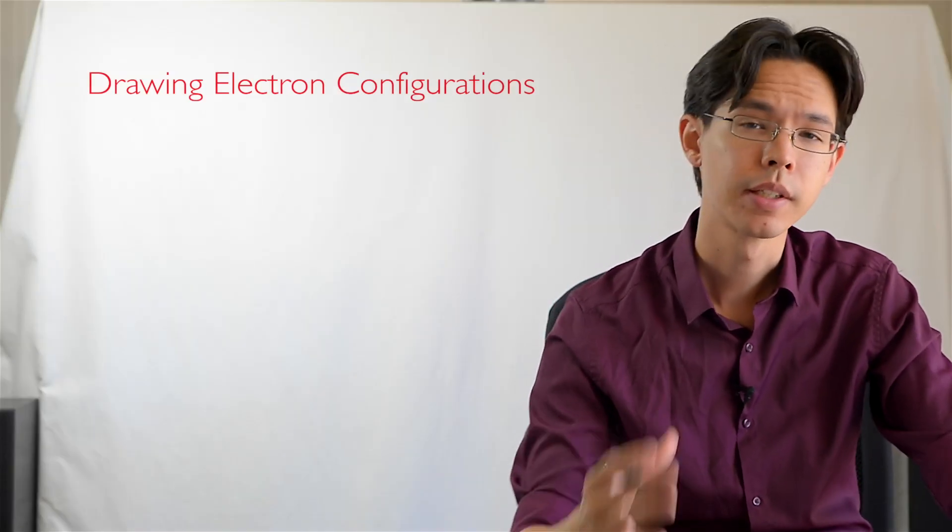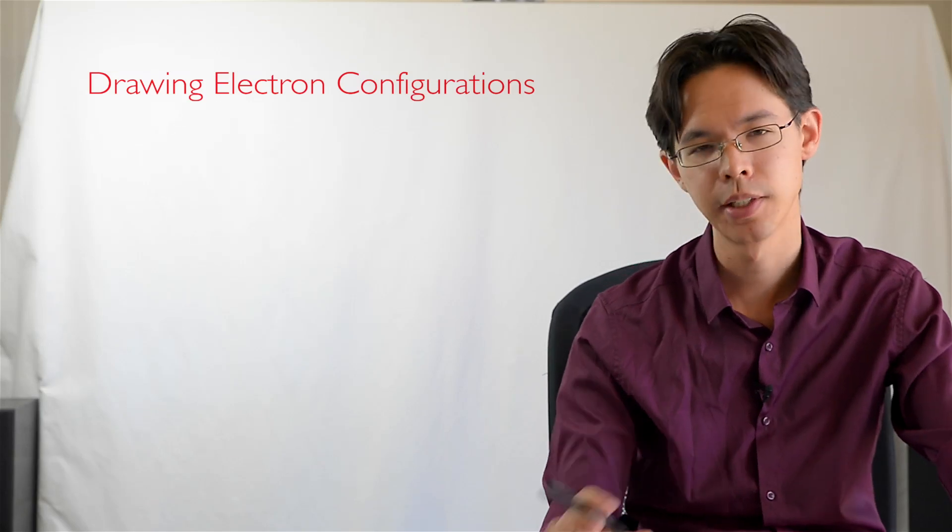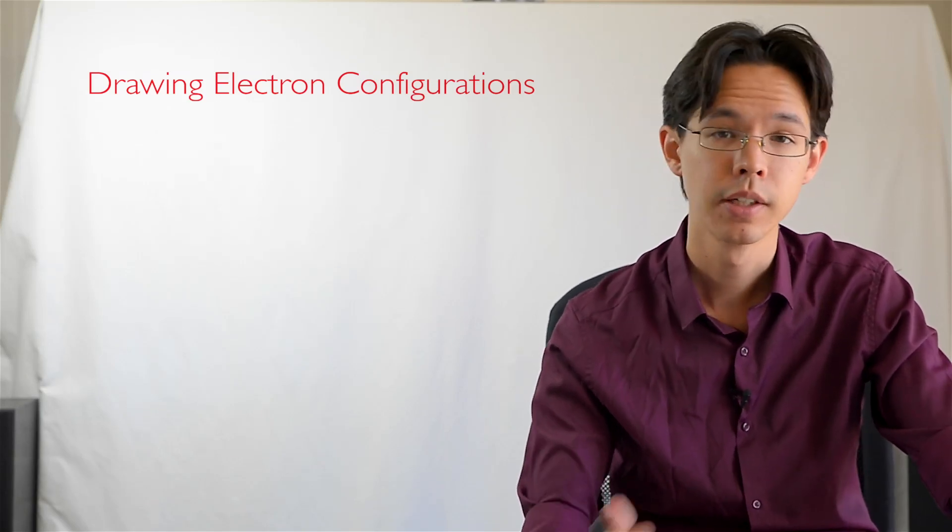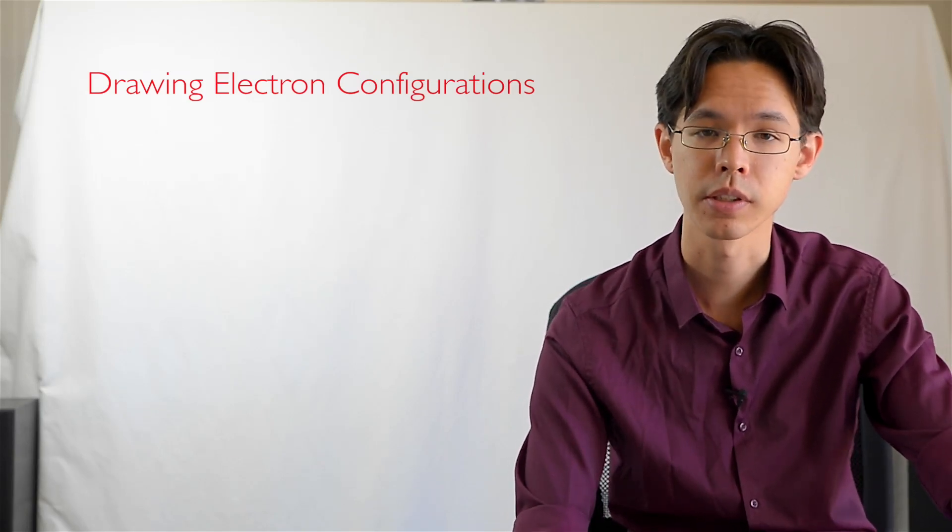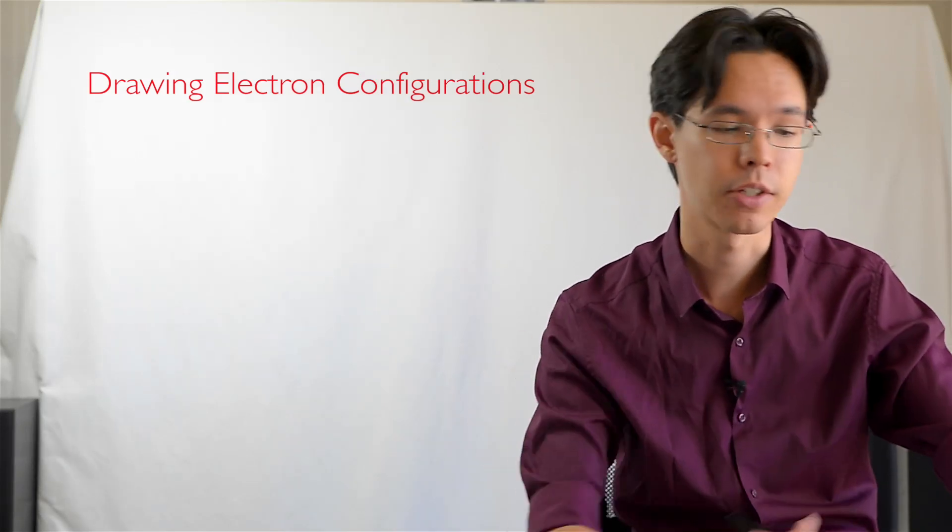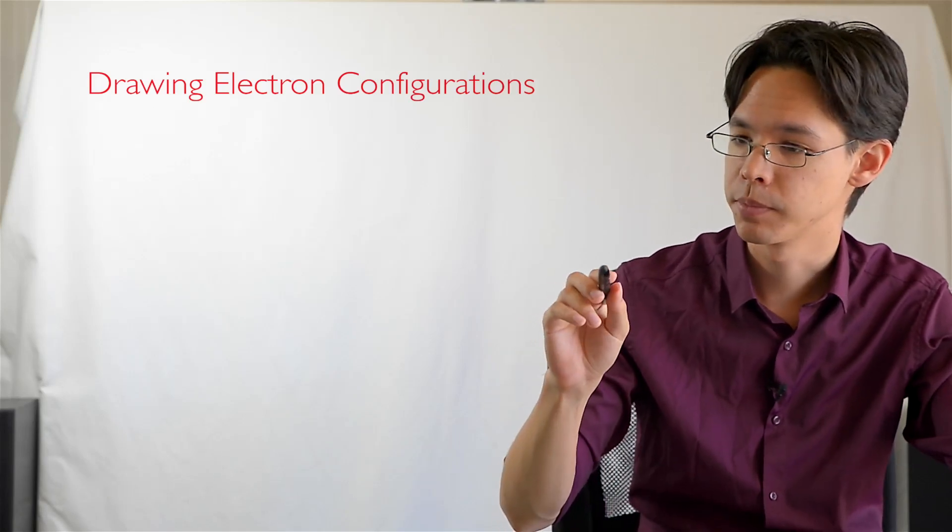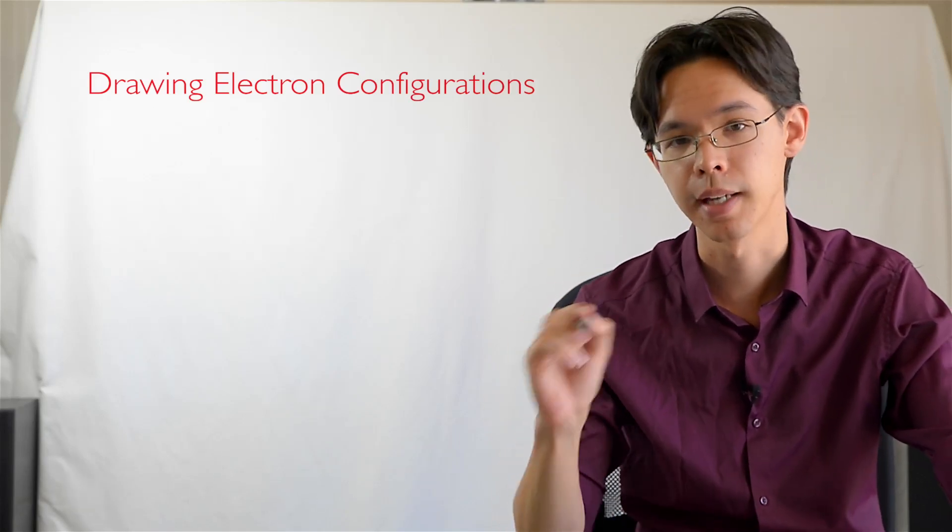Hello and welcome to today's video. Today we are going to learn how to draw an electron configuration as well as learn the shorthand of writing this down called writing electron configurations. Before we move on, I have to explain what is an electron configuration. It's very easy, it's just where are the electrons, where are they located around the atom?